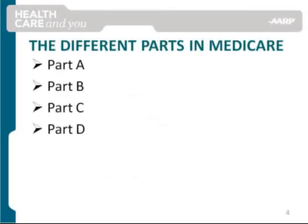When we consider our health care needs, they involve three areas: hospitals, doctors, and medications, and the different parts in Medicare address these needs. Part A offers hospital insurance, Part B offers medical insurance, and Part D offers prescription drug insurance. You may wonder why I skipped Part C. Part C refers to an option in Medicare called Medicare Advantage, which is one of the two options for how people receive their Medicare coverage. We will cover Part C in more detail in the section about the two Medicare options.